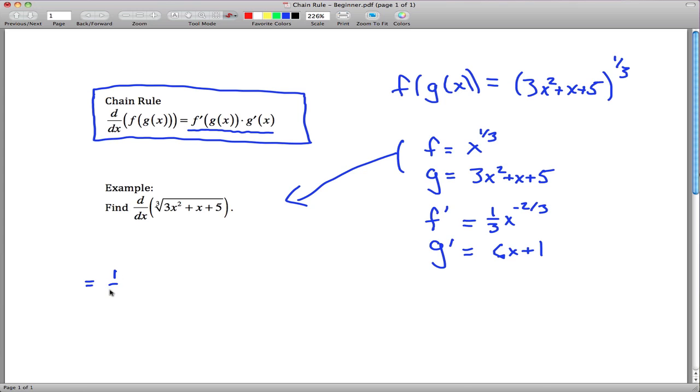That is, we're going to have 1/3 and then instead of x, 3x squared plus x plus 5, all raised up to the negative 2/3 power. There's the negative 2/3 right there. Be careful, you're still not done. We just took care of this part right here, we still have to multiply by g prime of x, which is 6x plus 1. Make sure you get the parentheses here, otherwise it would just be 6x times all this stuff and then plus 1. But you want 6x plus 1 times all this stuff. So that is the derivative, that is the chain rule.